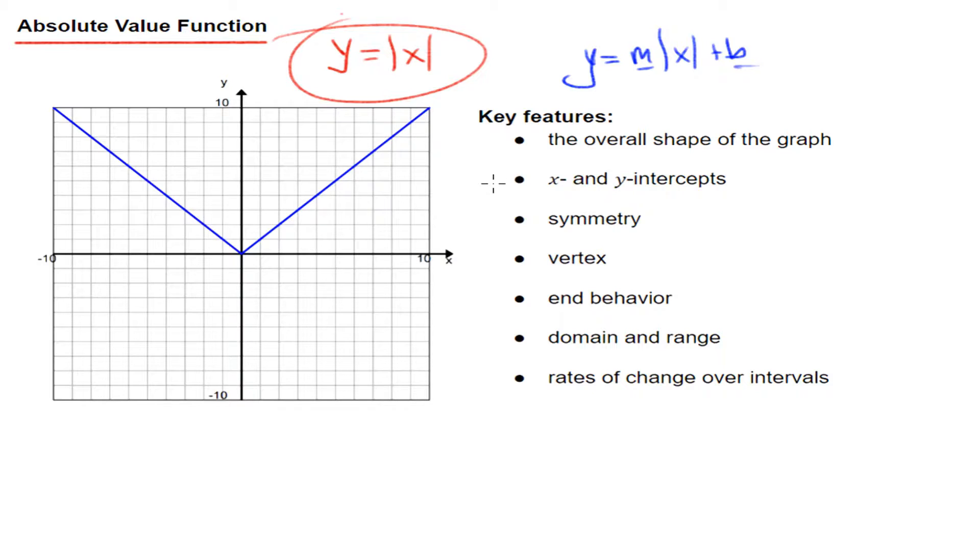In this video, we'll have seven features: the overall shape of the graph, the x and y-intercepts, symmetry, vertex, end behavior, domain and range, and rates of change over intervals. If you need to jump to a specific topic, go ahead and look in the description, and I'll have a timestamp to jump there.